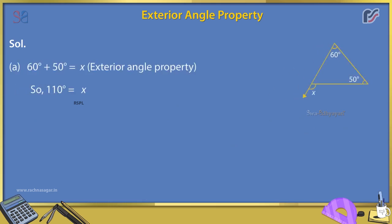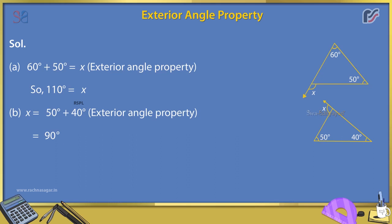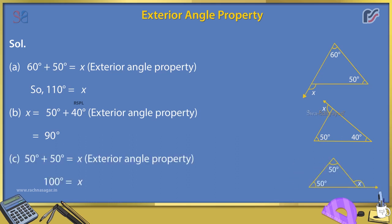Example 4: Find x in the following. Solution A: 60° + 50° = x (exterior angle property), so x = 110°. B: x = 50° + 40° (exterior angle property), which equals 90°. C: 50° + 50° = x (exterior angle property), so x = 100°.